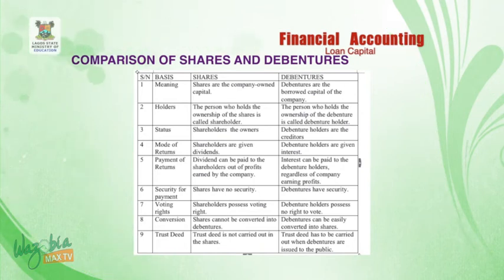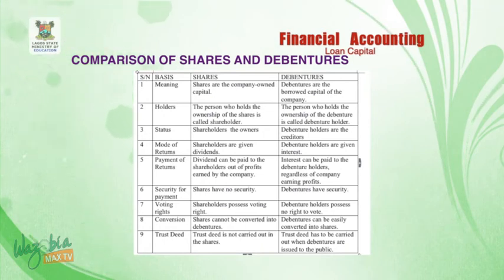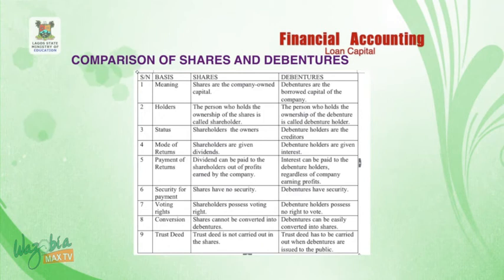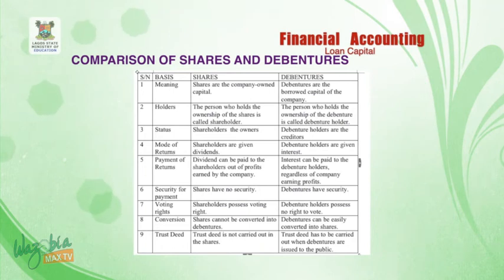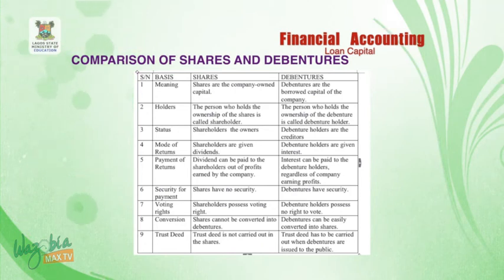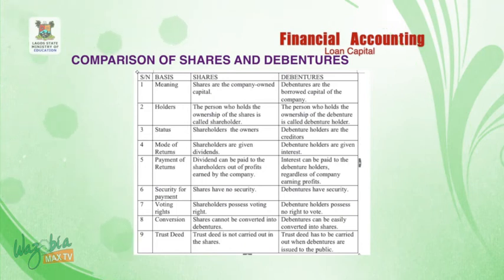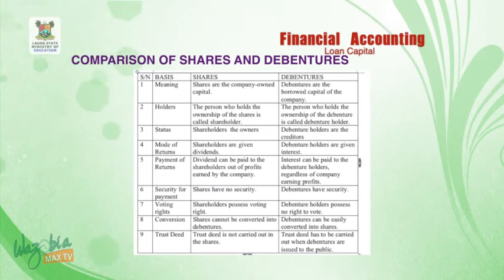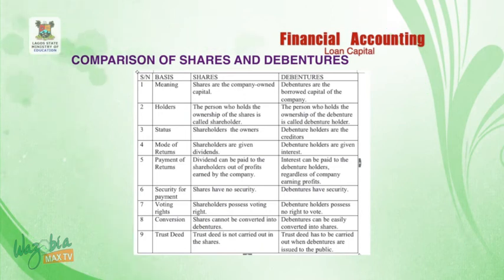Number six — on security for payment: shares have no security, but debentures have security. Number seven — on voting rights: shareholders possess voting rights, but debenture holders have no right to vote. Number eight — on conversion: shares cannot be converted into debentures, whereas debentures can be easily converted into shares. Number nine — on trust deed: a trust deed is not required for shares, whereas a trust deed has to be carried out when debentures are issued to the public.